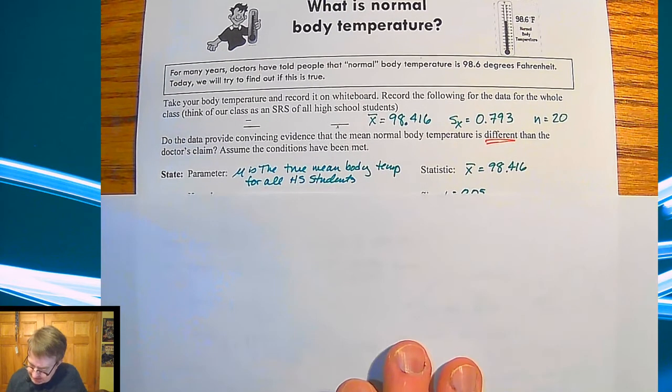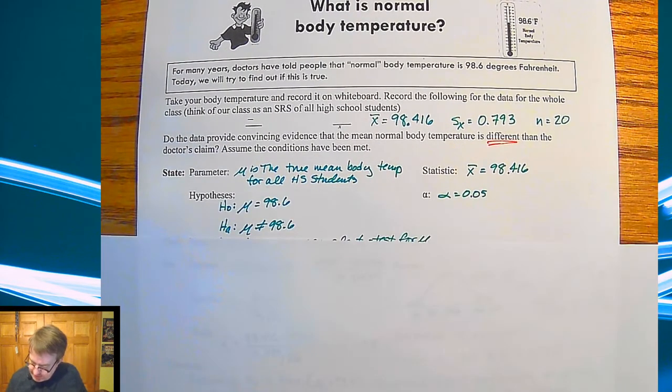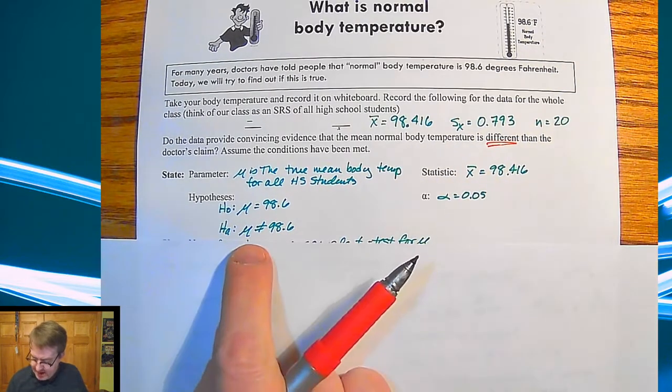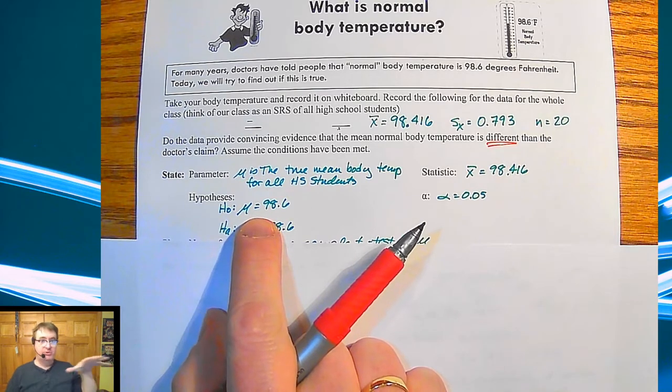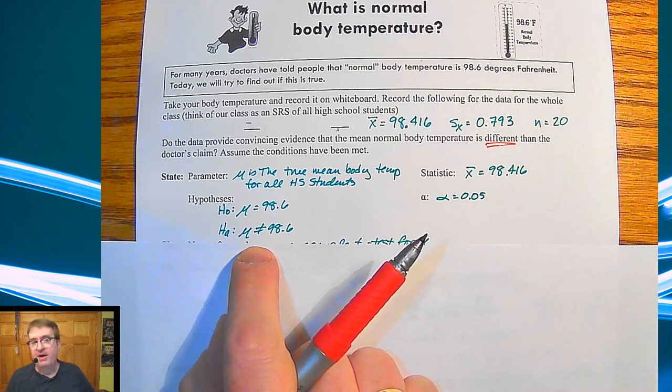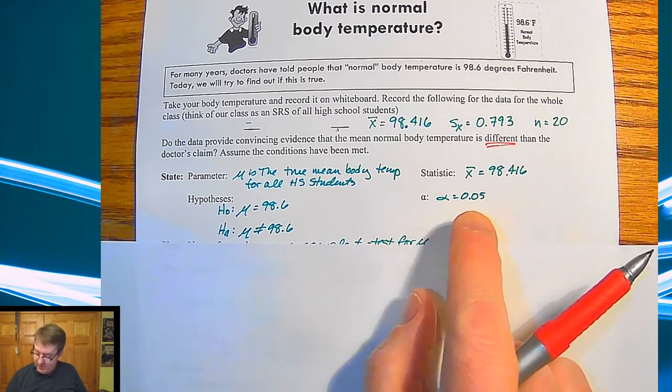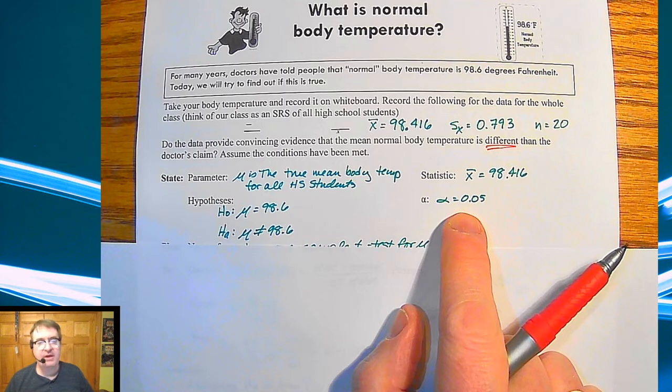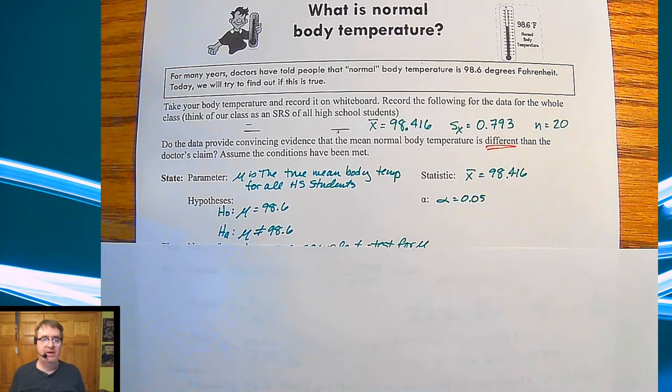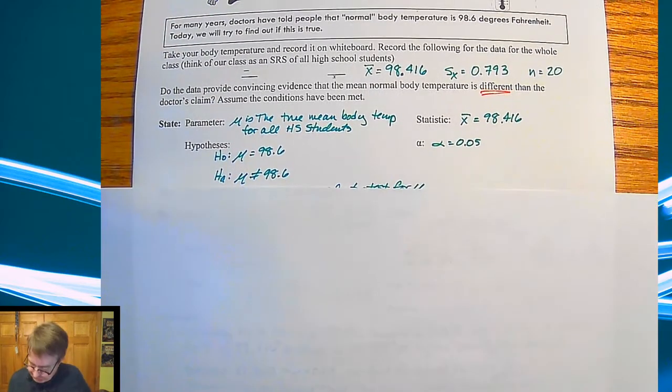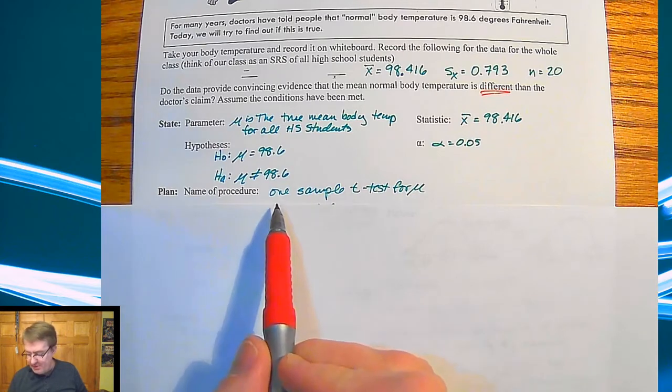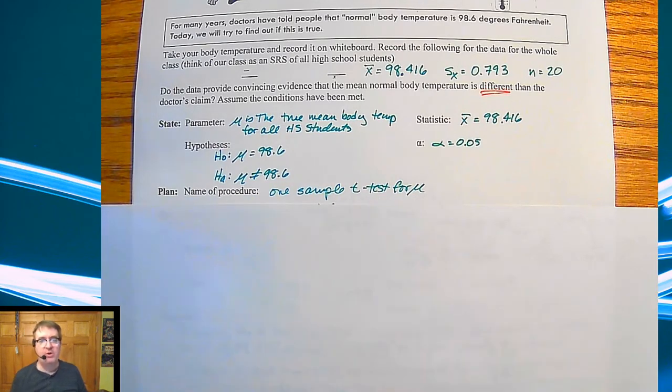Here's the state section. The parameter is the true mean body temperature for all high school students. There's my statistic for my sample. The two hypotheses: the null hypothesis, we're assuming everything the doctors say is true, is 98.6 is the mean body temperature. The alternative hypothesis is saying that it's not 98.6. We are going to go to a 5% alpha value at our significance level. Remember 5% is kind of our default for that. Our name of our procedure is a one-sample t-test for means. Make sure that you say all of it: how many samples, what type of test, and what you're doing it for.